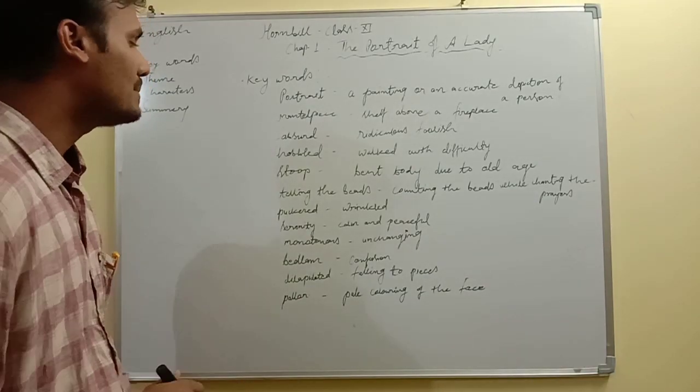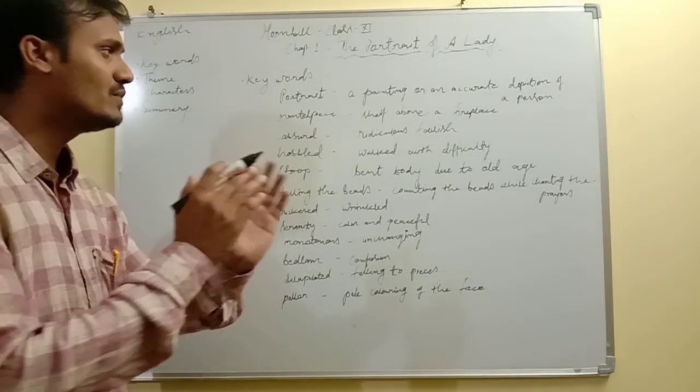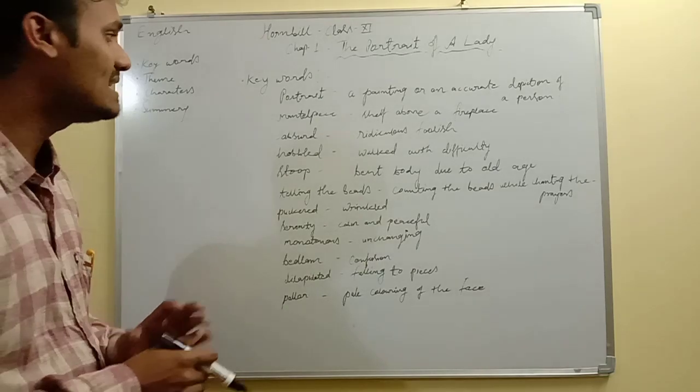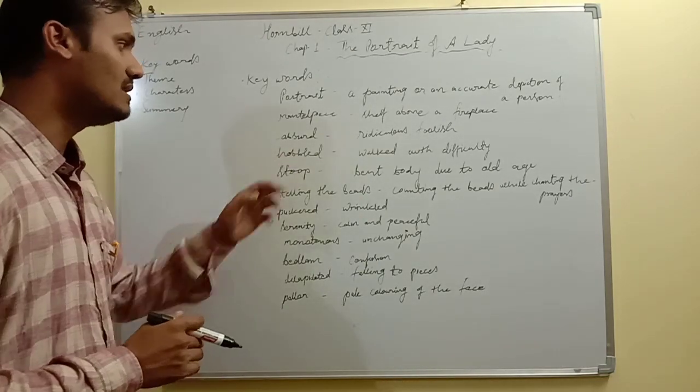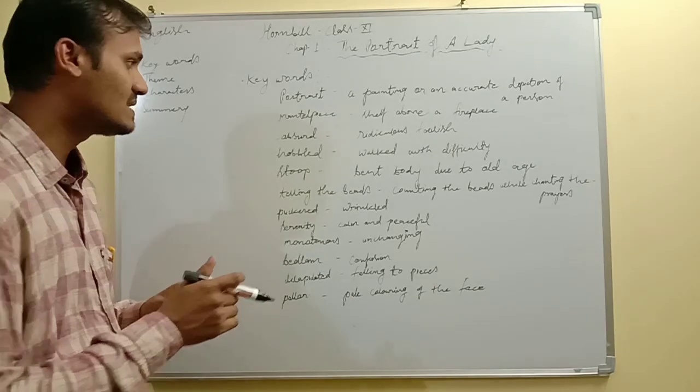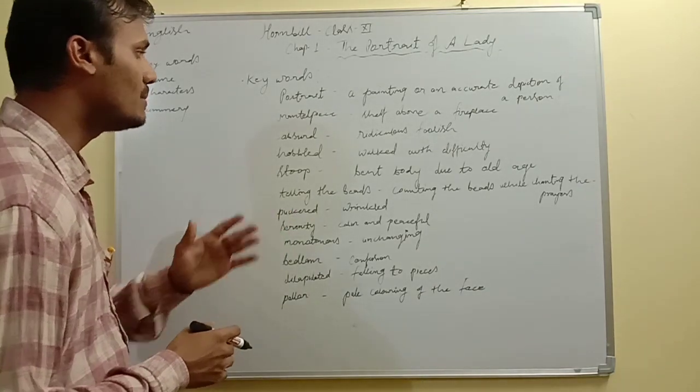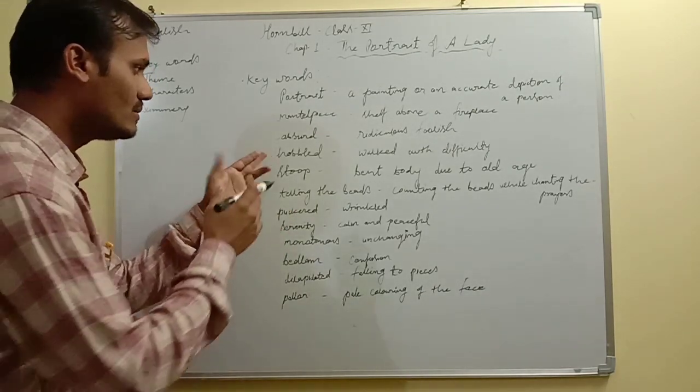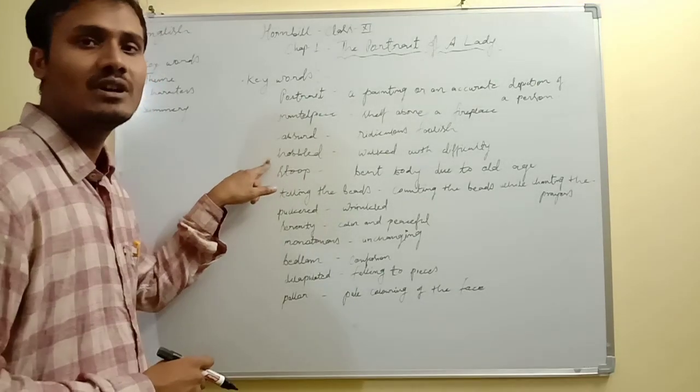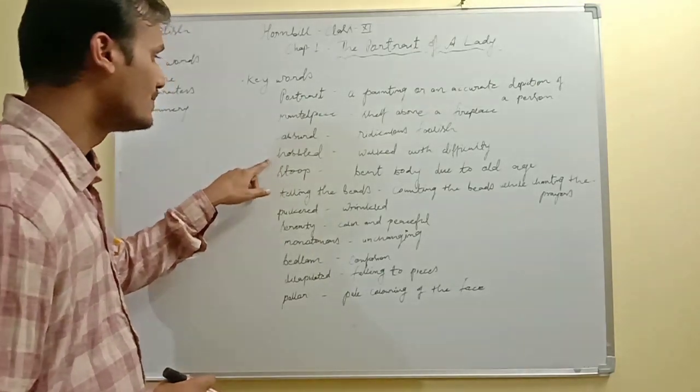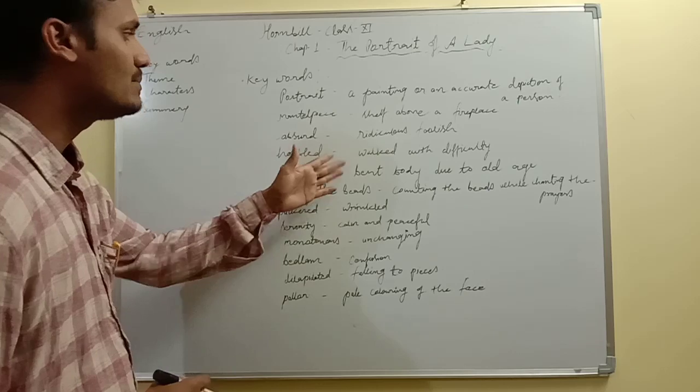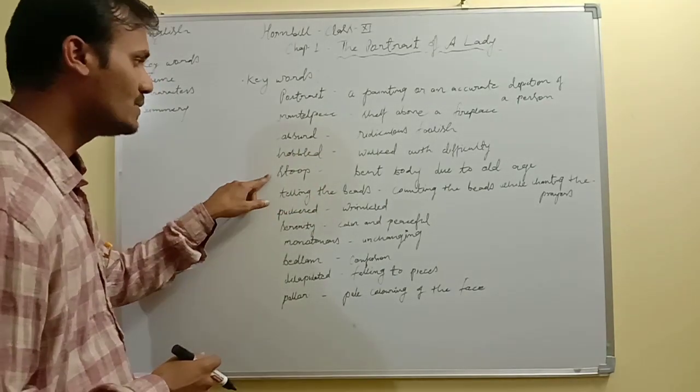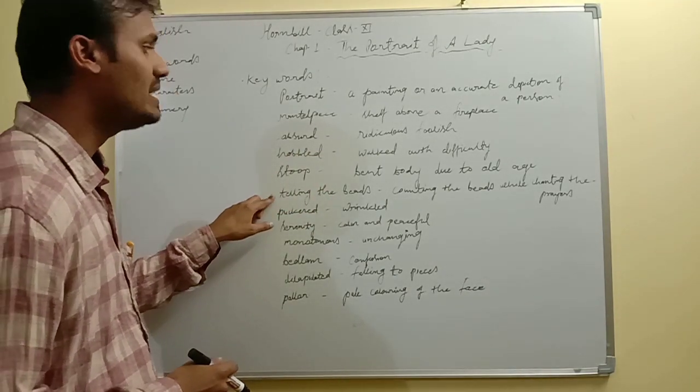Absurd means something which is ridiculous or foolish. Hobbled means walked with difficulty. If somebody is walking with difficulty, you can say she hobbled. This word is used for the grandmother of the author. Stoop means bent body due to old age. This word is also used for the grandmother.